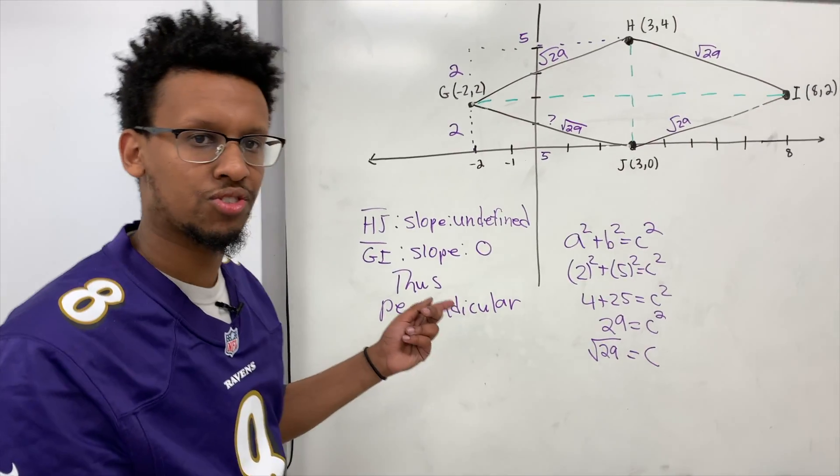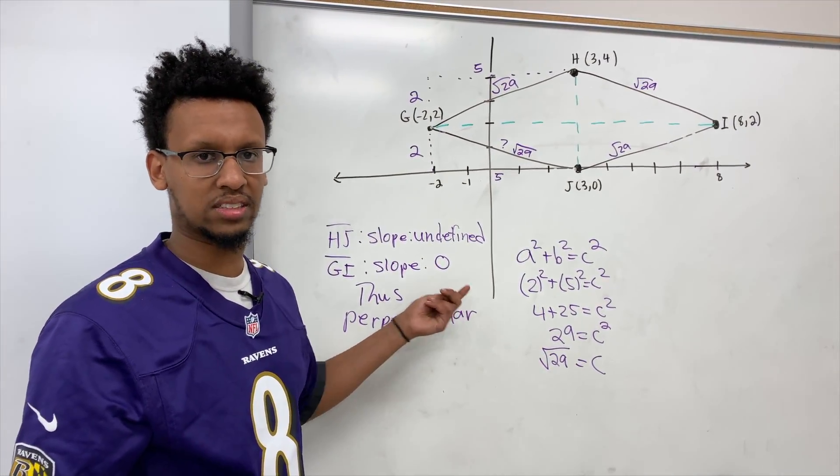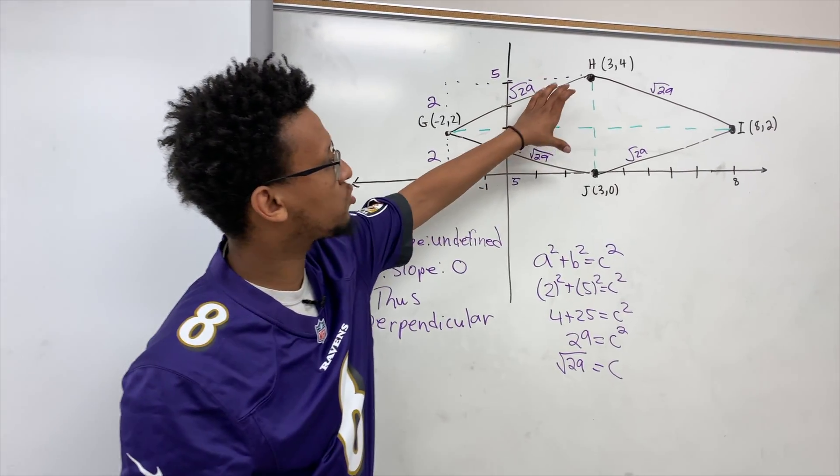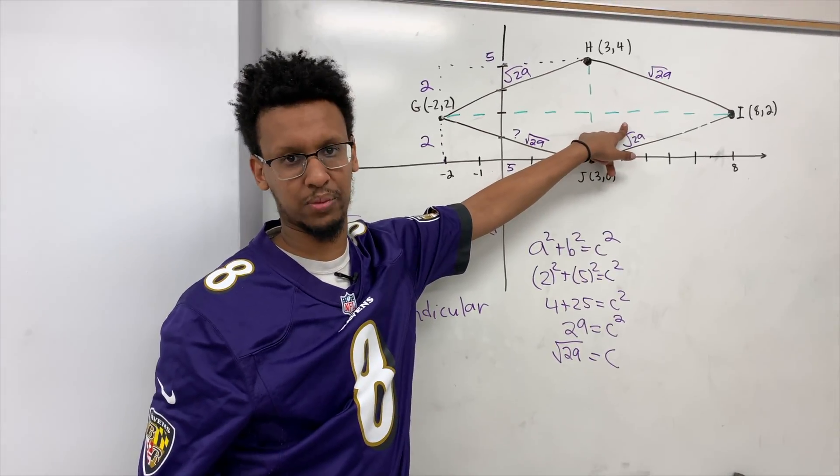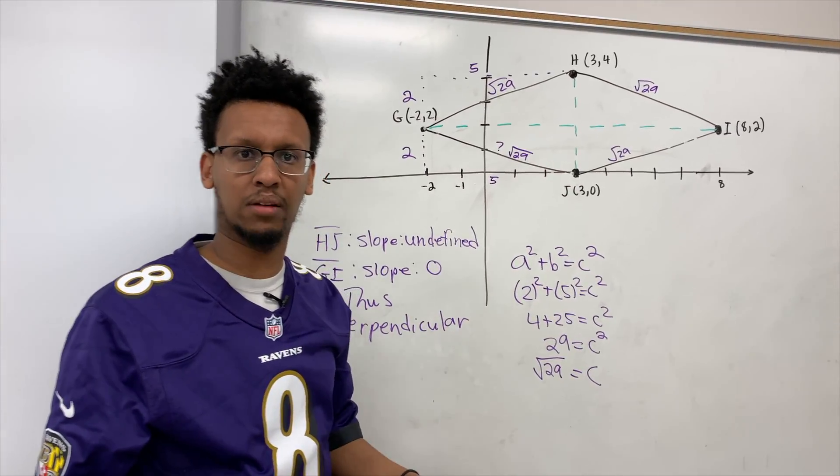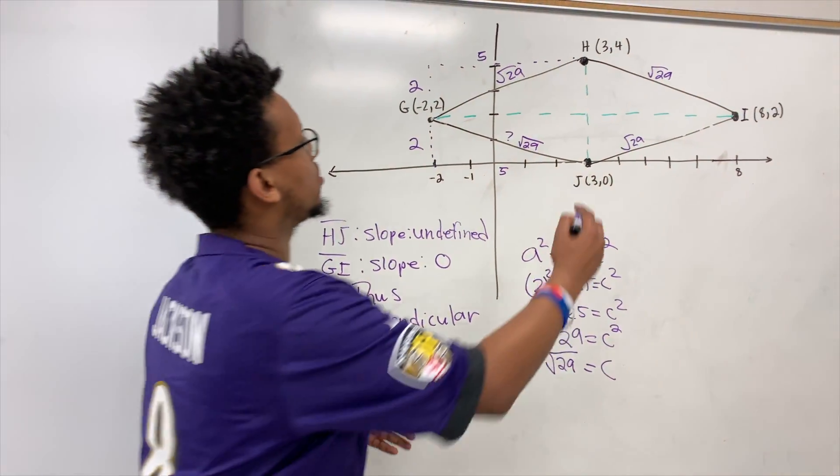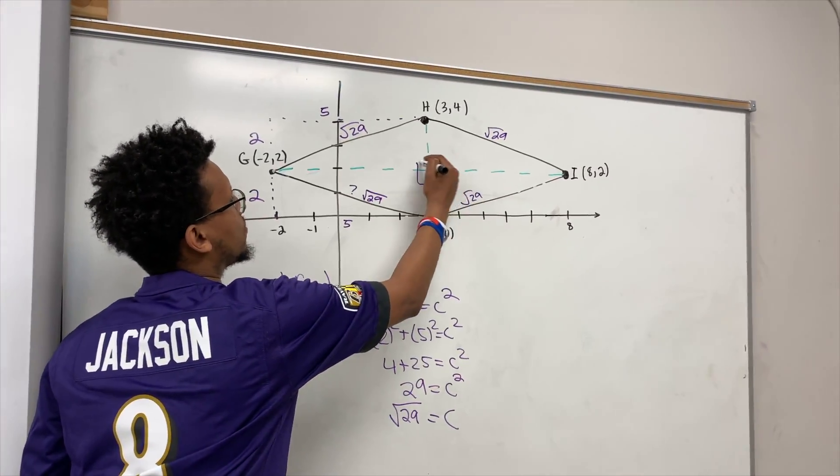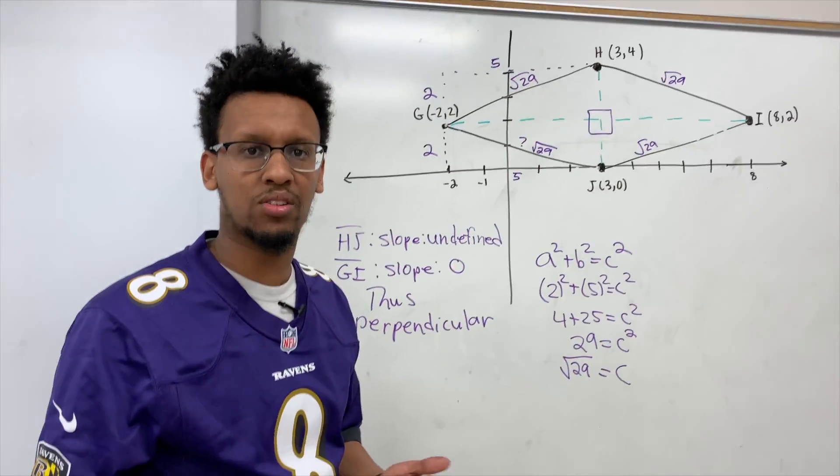This is the only strange example where you can get undefined and zero. So let's say that this was a half. That means that this would have to be negative two over one in order for it to be perpendicular, because perpendicular means opposite reciprocal. So we have shown that we have four right angles, and we have proven that it's a rhombus.